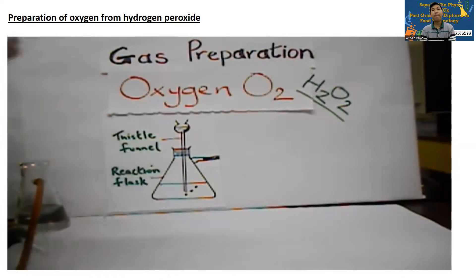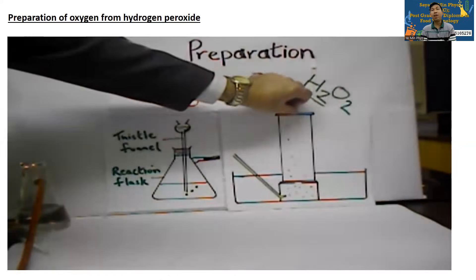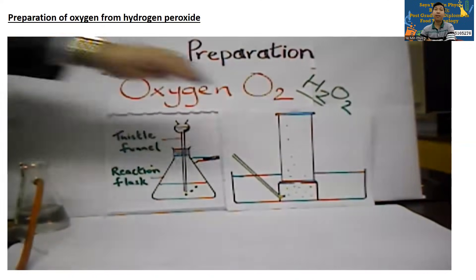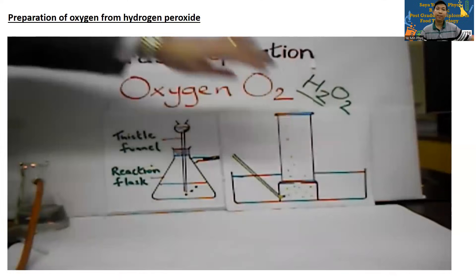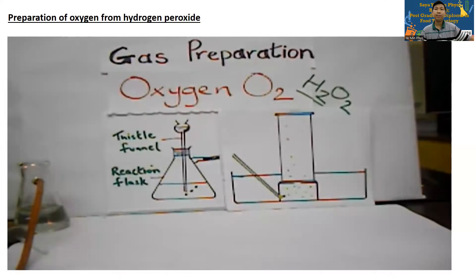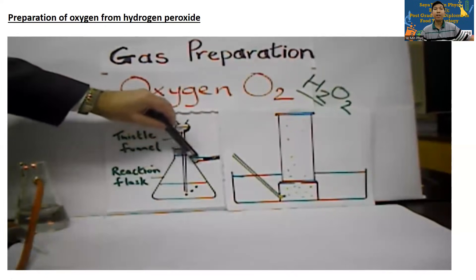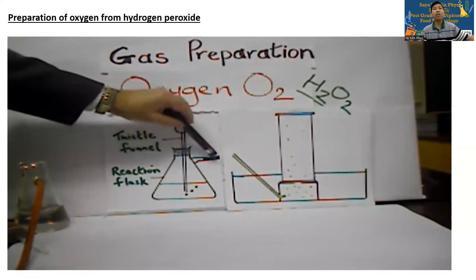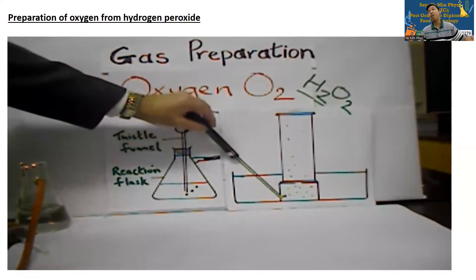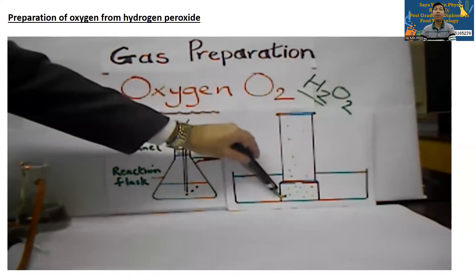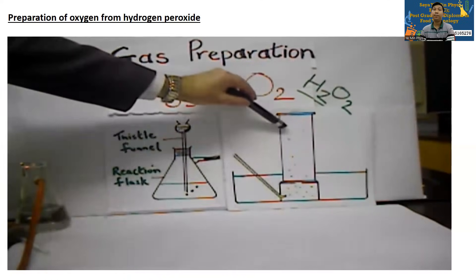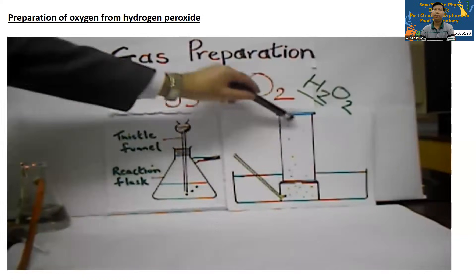We will collect the oxygen gas by the displacement of water. The density of oxygen means it is not collected by downward displacement of air like we did for hydrogen, and we cannot collect it by upward displacement of air like we did for carbon dioxide. The only method available to us is to collect it by water displacement.